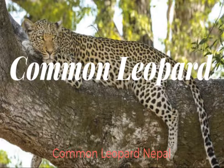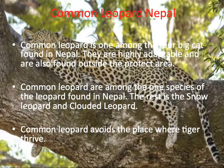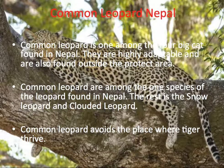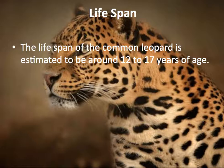Common leopard in Nepal. The common leopard is one of the big cats found in Nepal. They are highly adapted and also found outside protected areas. There are three species of leopard found in Nepal: the common leopard, the snow leopard, and the cloudy leopard. The common leopard inhabits places where tigers also thrive.